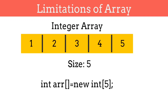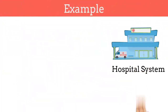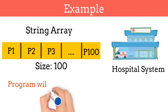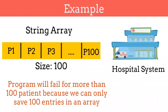Let's understand this with the help of an example. Consider I have to develop a software for a hospital system. For storing patient names, I have created an array of size 100. Our program will work perfectly for 100 patients, but what if 101 patients come? Our program will fail because we can only store 100 elements in our array. So in real life, we cannot predict how many numbers users want to save in the array.